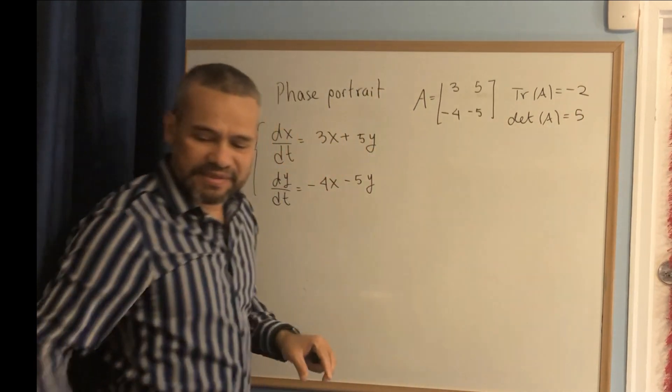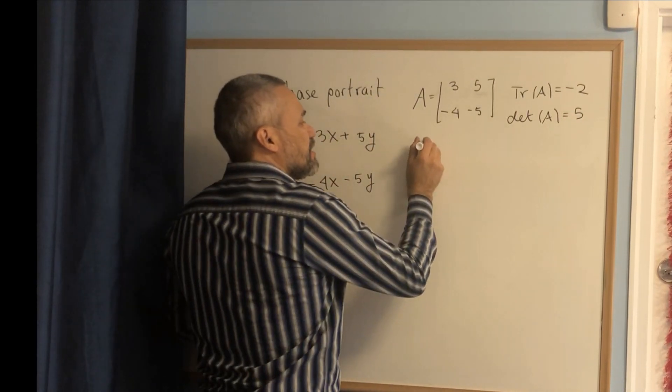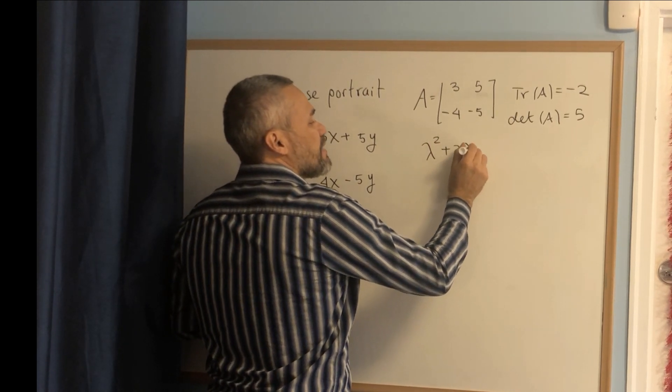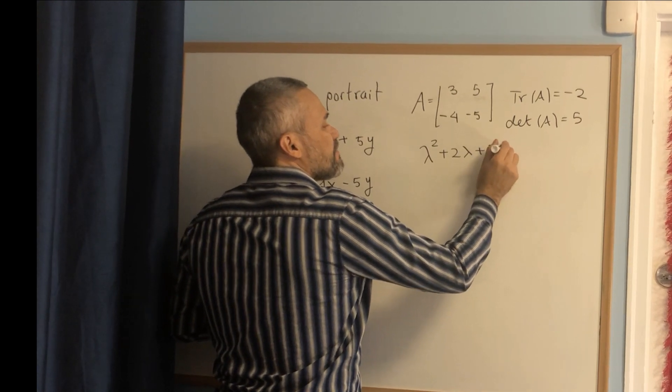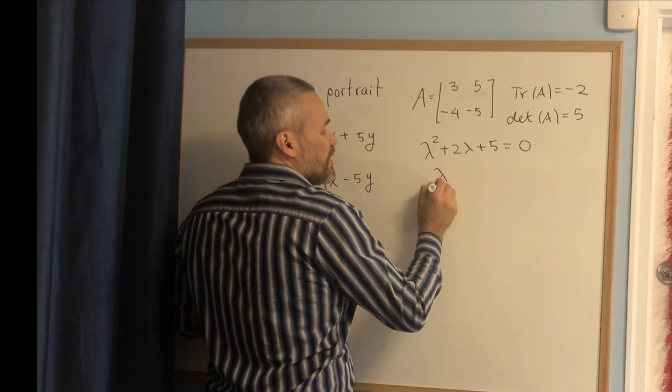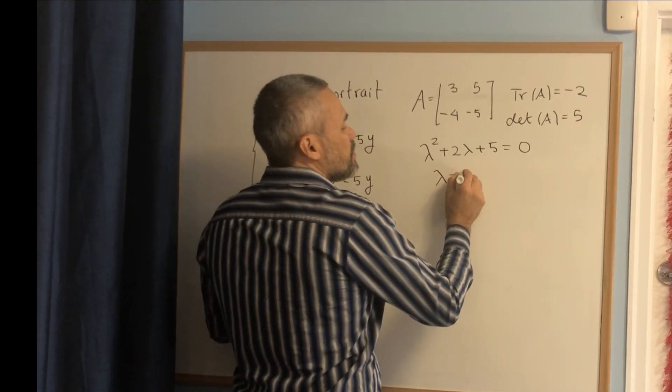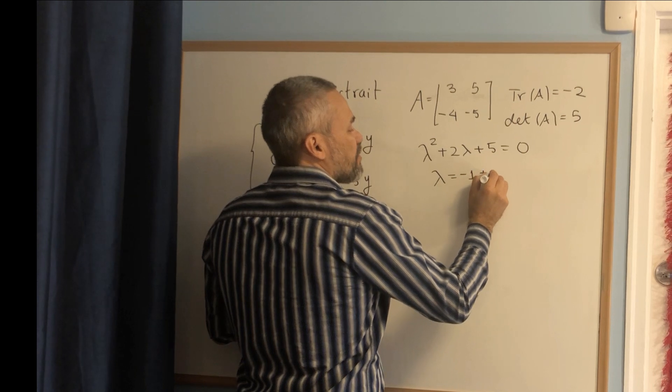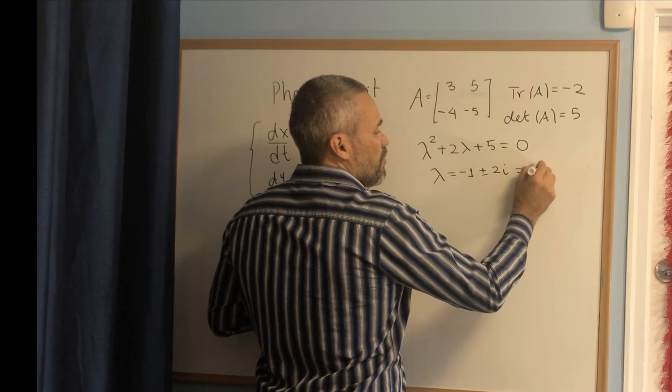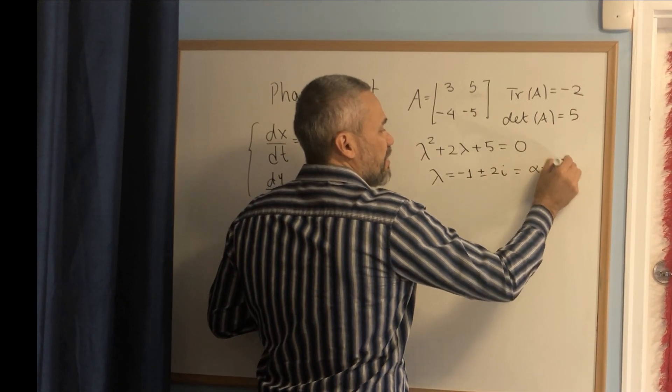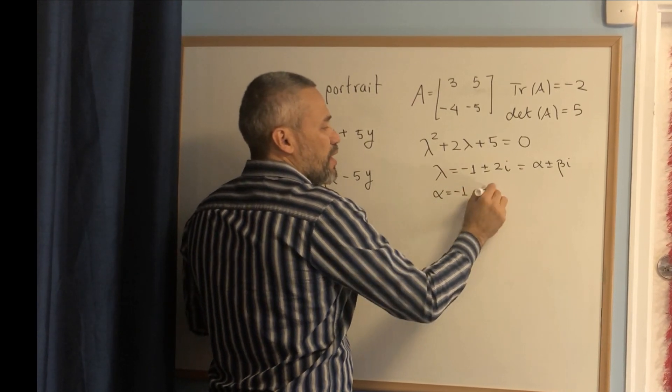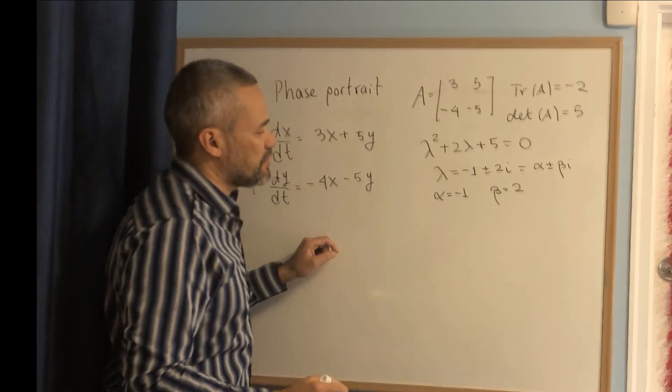The characteristic equation is λ² minus the trace times λ plus the determinant equals 0, so λ² + 2λ + 5 = 0. Using the quadratic formula, we get λ = -1 ± 2i. Writing this in the form α ± βi, we have α = -1 and β = 2.